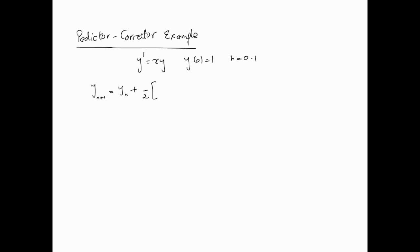In this video we're going to look at an example of the predictor-corrector method. We'll be looking at the second-order Adams-Bashforth and Adams-Moulton methods — the Adams-Bashforth is the explicit method and the Adams-Moulton is the implicit method.